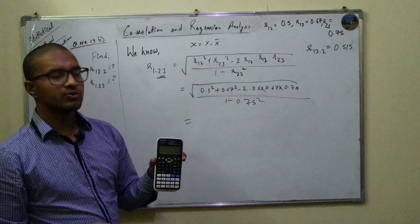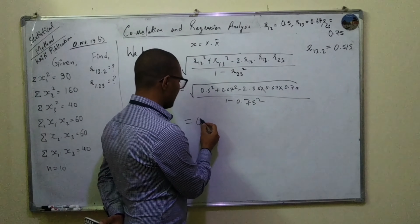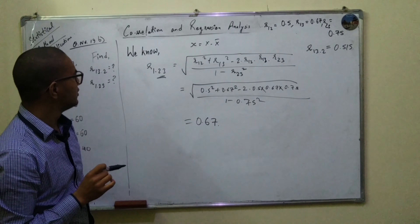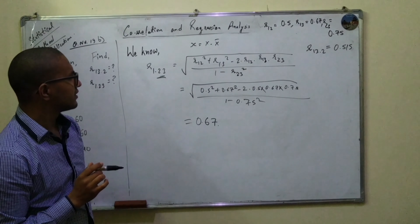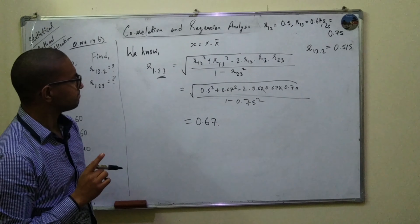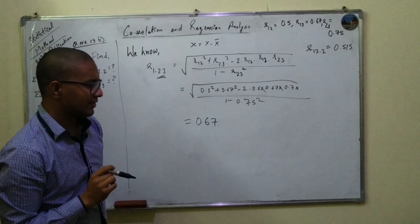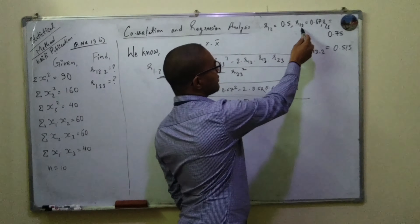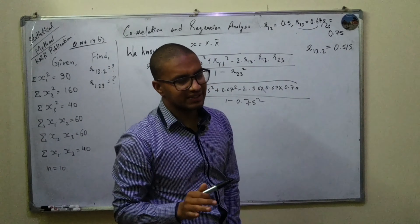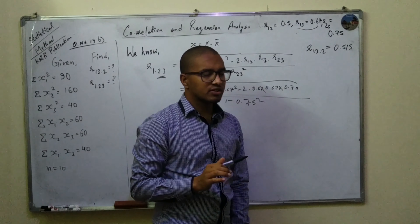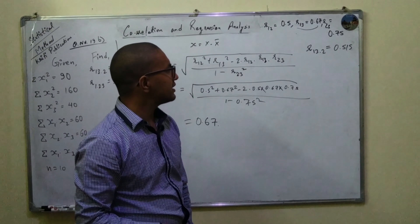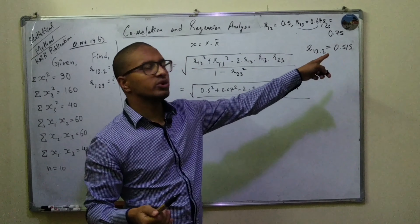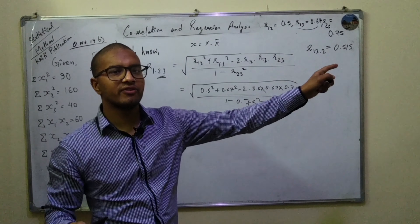Computing this gives us approximately 0.67. So the combined effect of the second and third variables on the first variable gives a multiple correlation of around 0.67. As you can see, the correlation between the first and third variable alone was 0.67, but when we keep variable 2 constant using partial correlation, it drops.